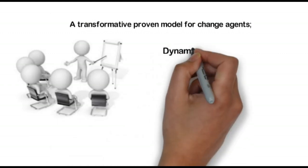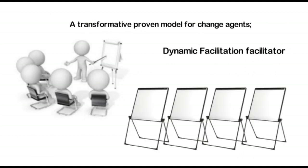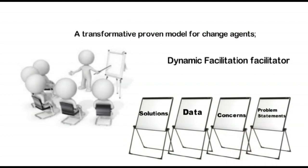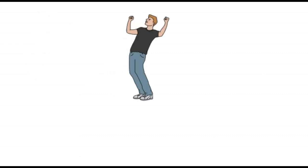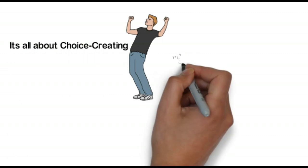It all starts with a Dynamic Facilitation facilitator—that will be you—and four flip charts: solutions, data, concerns, and problem statements. Dynamic Facilitation is inherently designed to cause shifts and breakthroughs in thinking. It's all about choice-creating.